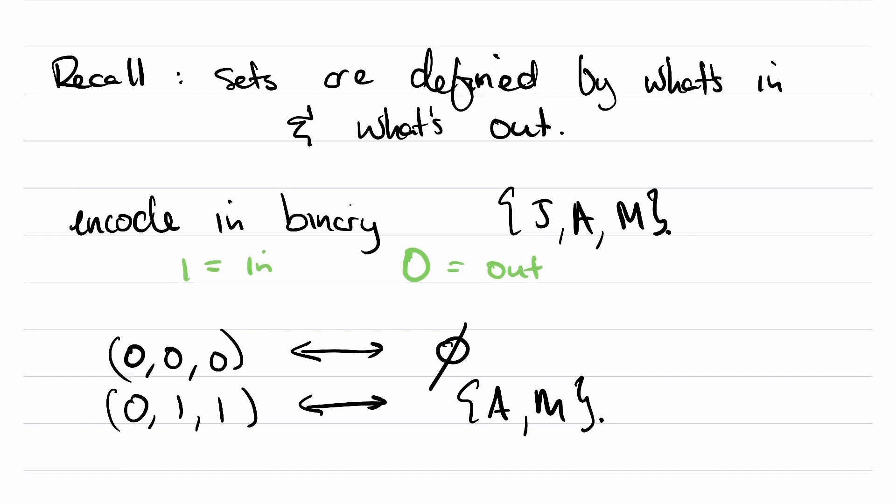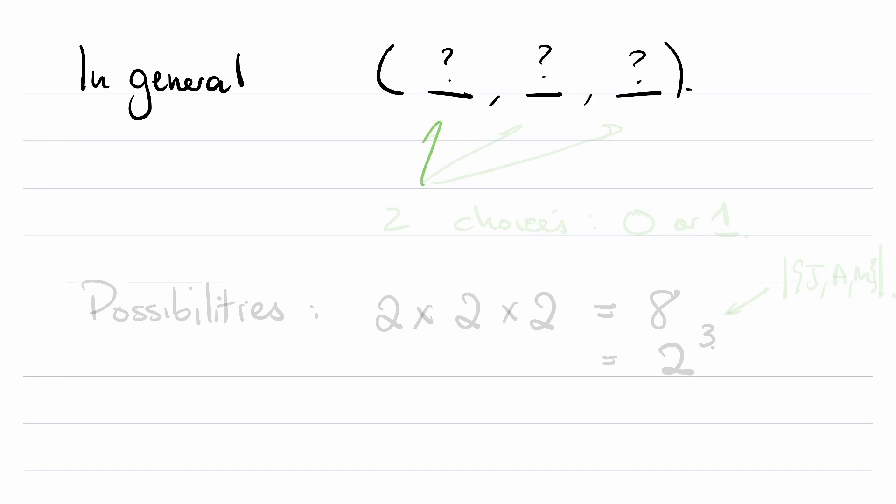And you can see that we can play this game. Every single subset will either have that element in or out. So we can exhaust all the possibilities by just listing all the different ways that each element can be in or out of the set. In general, what we're going to have is three numbers. The choices for these three numbers can be either 0 or 1. So there's two choices for each. And this corresponds to all the possibilities. There are two choices for J, either in or out. Two choices for A, either in or out. And this is going to be 8, otherwise known as 2 to 3. I'm doing this suggestively because this, as you might recall, is the cardinality of the set in question.